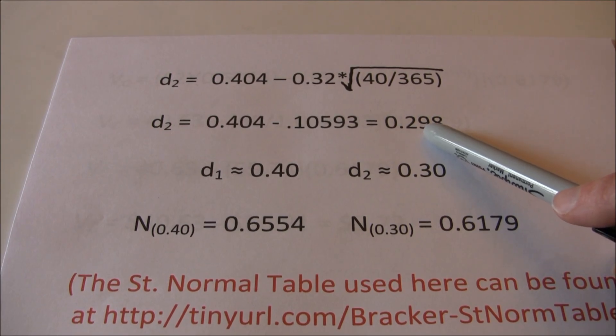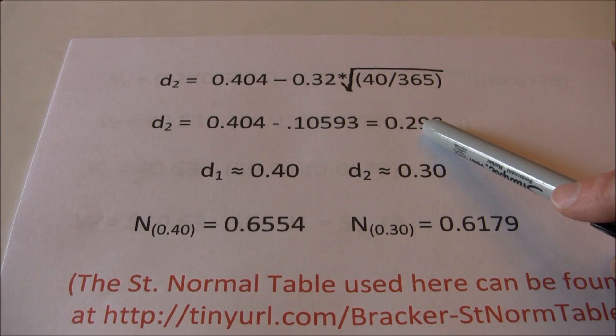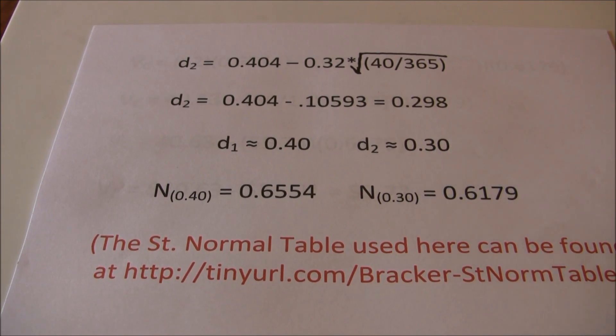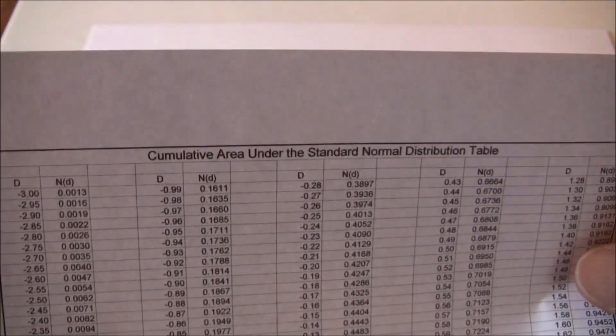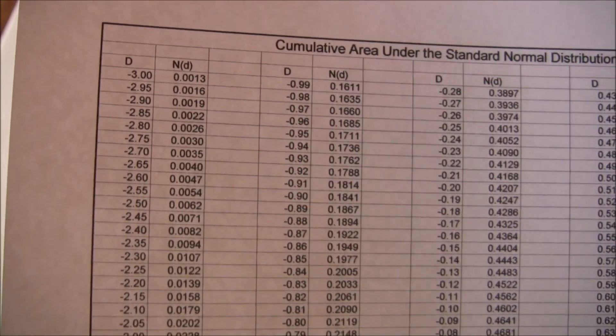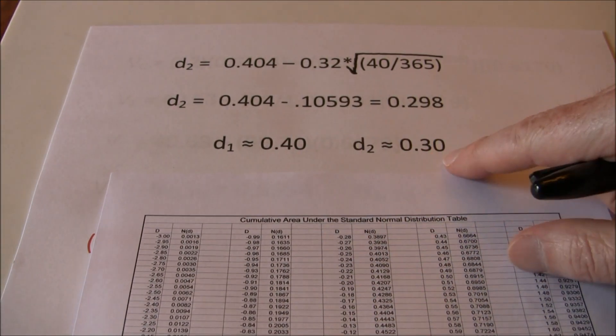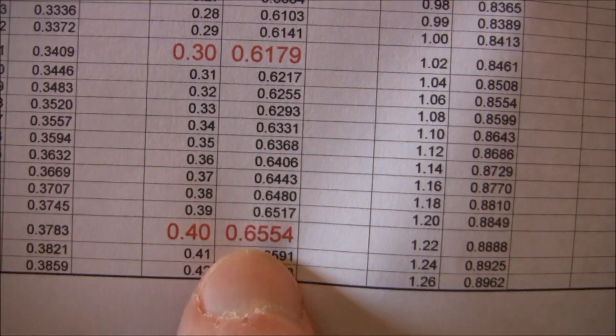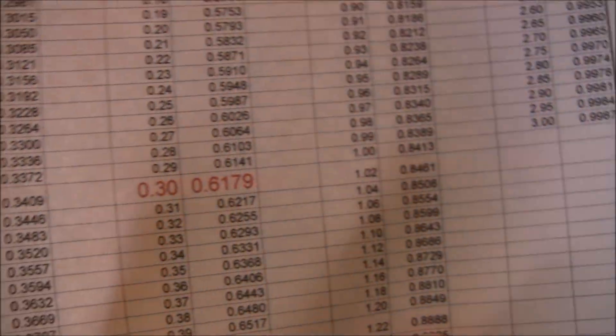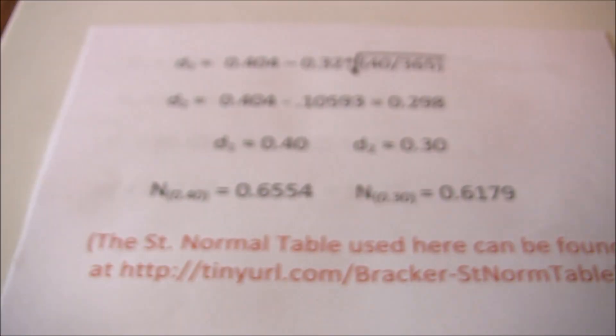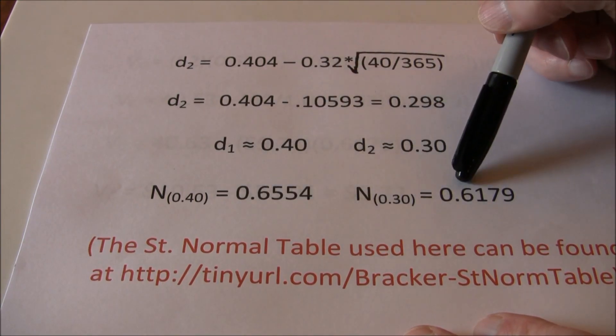Now we're going to have to look these values up under a standard normal distribution table. And the standard normal distribution table that I've set up carries everything out to two decimal places. And you might have went and printed that out from Google Docs. You can see here what we've got, standard normal distribution table. We've got column of Ds, column of N(D1)s and we want to find 0.40 and 0.3. So if we look at that, 0.40 on this gives us a value of 0.6554, 0.30 gives us a value of 0.6179. So those are N(D1) and N(D2).